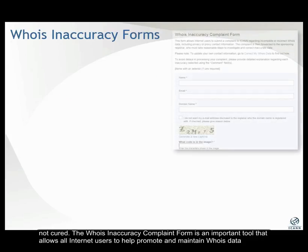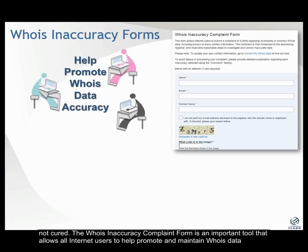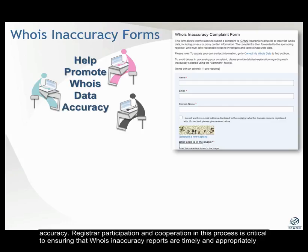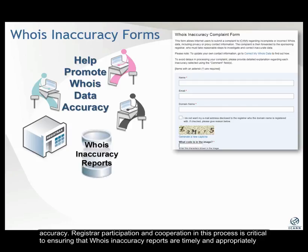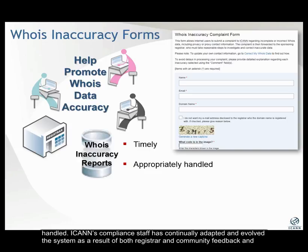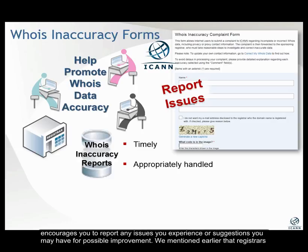The WHOIS Inaccuracy Complaint Form is an important tool that allows all Internet users to help promote and maintain WHOIS data accuracy. Registrar participation and cooperation in this process is critical to ensuring that WHOIS Inaccuracy reports are timely and appropriately handled. ICANN's compliance staff has continually adapted and evolved the system as a result of both registrar and community feedback, and encourages you to report any issues you experience or suggestions you may have for possible improvement.